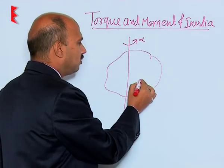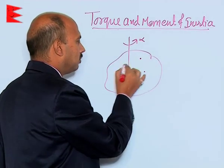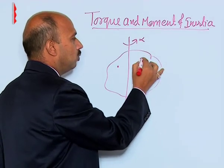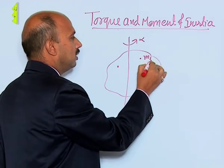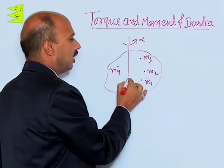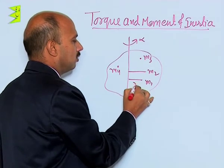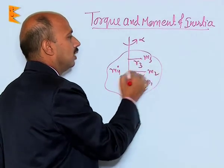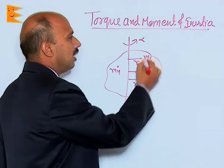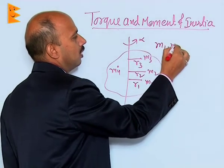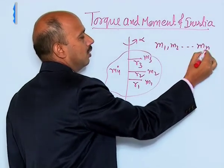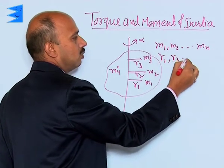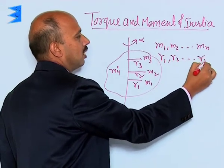This body is supposed to be made of a large number of particles like m1, m2, m3, and mn. Their distances from the axis of rotation are r1, r2, r3, and rn.